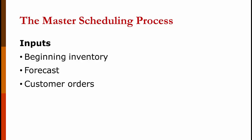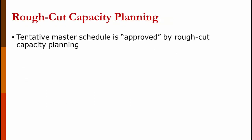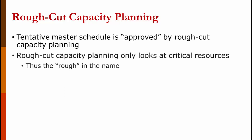These customer orders are sometimes called firm planned orders. The outputs are going to be the projected inventory — basically is inventory going up or going down — the master production schedule, the period-by-period production plan for each item, and any uncommitted inventory, which is inventory we're producing that is not linked to a firm planned order. When we have a tentative master schedule, it is approved by rough cut capacity planning — this is our first pass to make sure that we have adequate capacity. Rough cut capacity planning only looks at critical resources, the ones we're most likely to run out of.